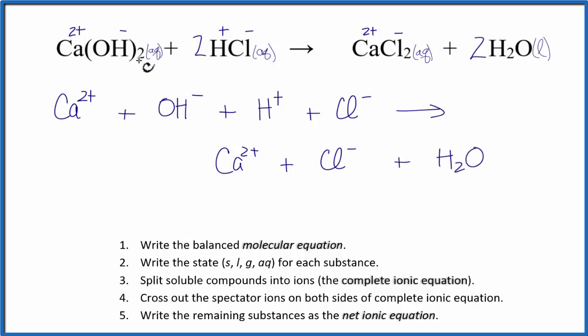We also need to take into account these subscripts here and these coefficients. So I have the 1 calcium, but this 2 applies to the hydroxide in parentheses, so I have 2 hydroxide ions. The 2 here applies to everything, so I have 2 of these H plus ions, the hydrogen ions, and then 2 chloride ions. On the product side, I have the calcium, and then again 2 chloride ions, and then 2 in front of the water, that's the coefficient there.